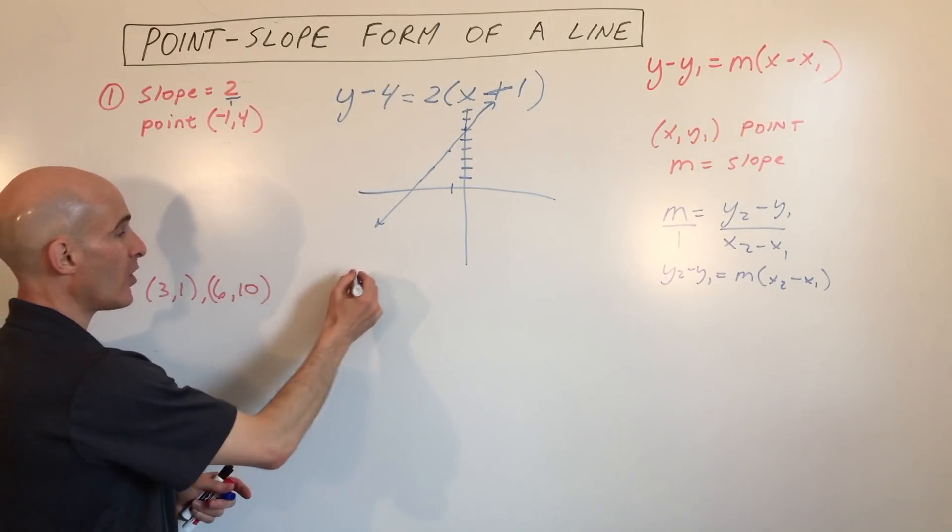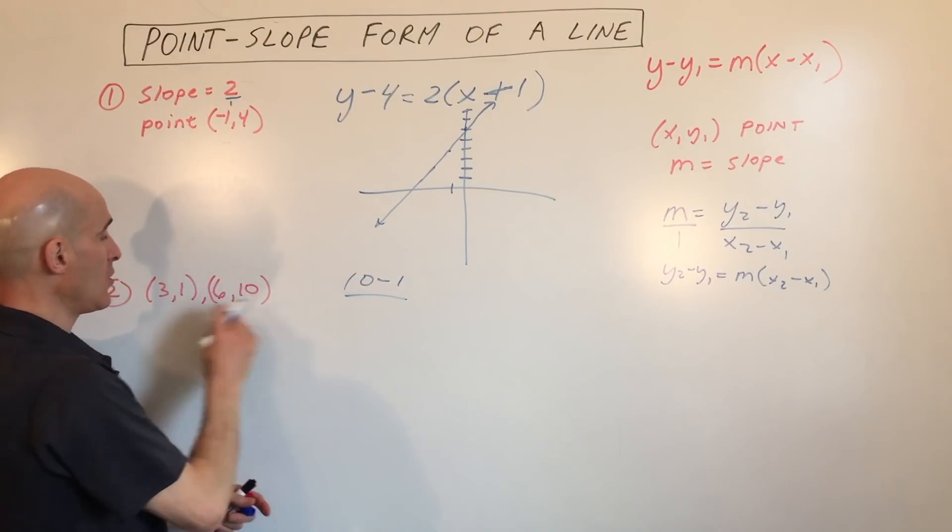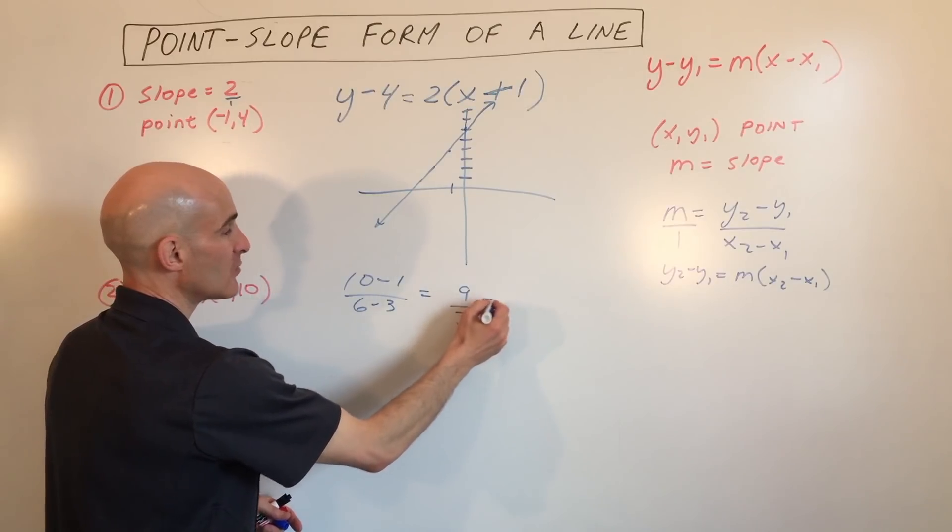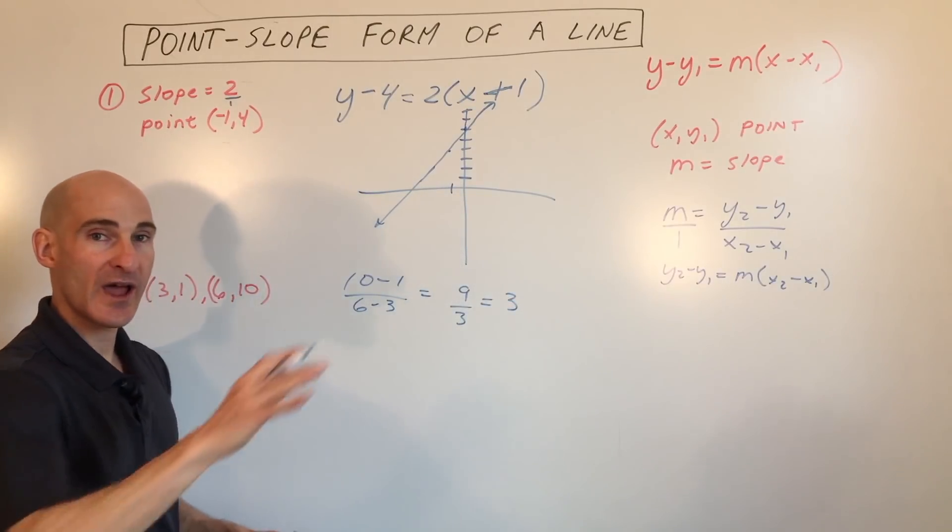We have y2 minus y1, so 10 minus 1, over x2 minus x1, which is 6 minus 3. So that's 9 over 3, which equals 3. So the slope of our line is 3.